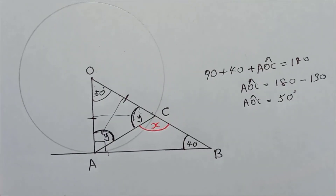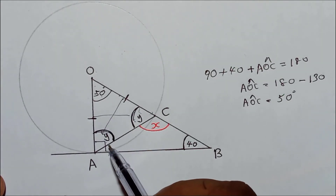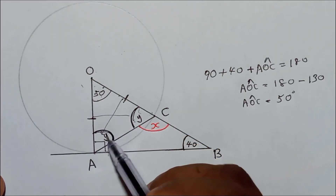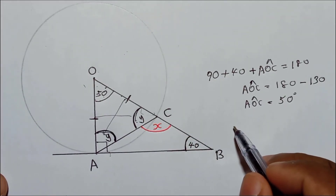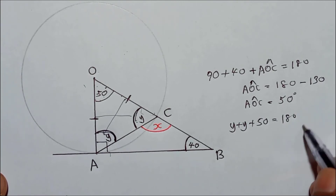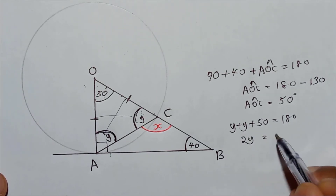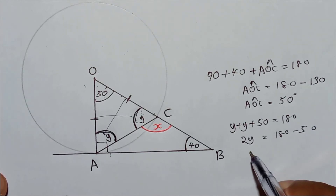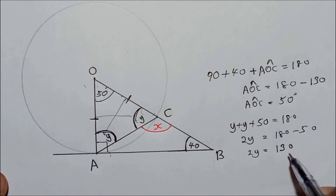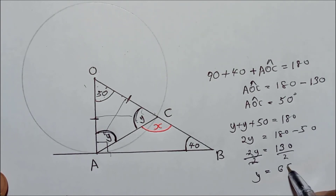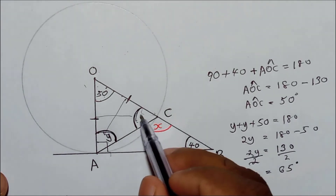Now, y plus y plus 50 should equal 180, because these are the interior angles of the triangle. So 2y plus 50 equals 180. Bringing 50 to the other side gives 2y equals 130. Dividing both sides by 2, y equals 65 degrees.